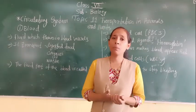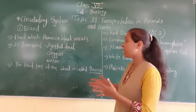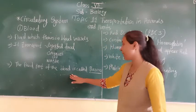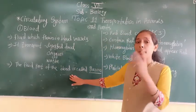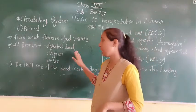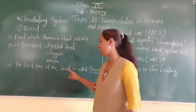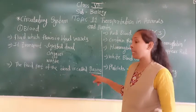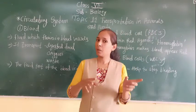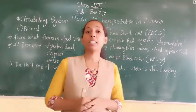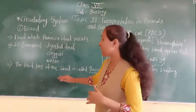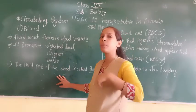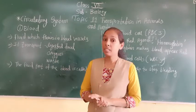How is it possible for the blood to transport all these different things? Blood can transport all these different things with the help of the fluid part of the blood. With the help of this fluid part, all transportation takes place, and that fluid part present in the blood is called plasma. Plasma is the liquid part present in the blood, and it also contains different types of cells.